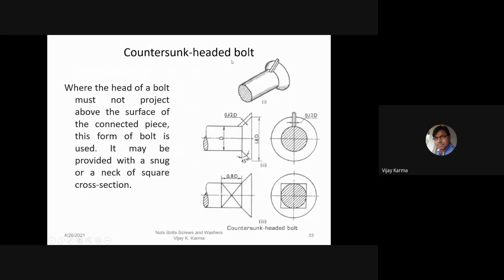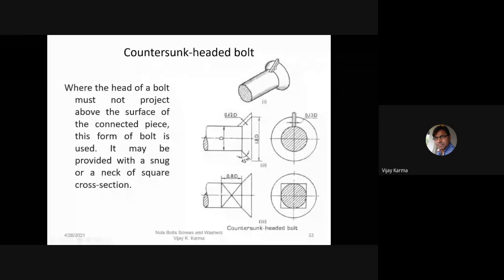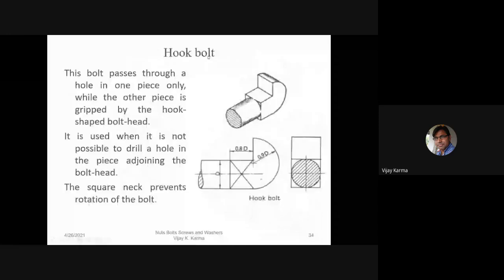The countersunk headed bolt is used where the head of a bolt must not project above the surface of the connected piece — for example, where a flat surface is needed such as a box covered with a cover plate. It may be provided with a snug or a neck of square cross-section to prevent rotation.